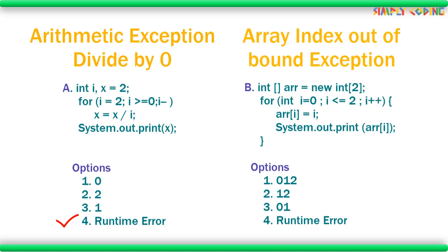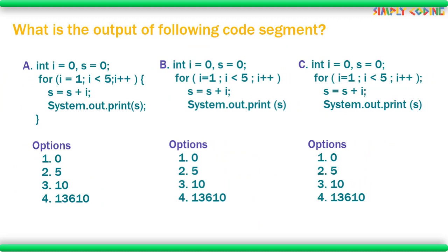In array index out of bounds, there is some condition when the index goes beyond the array size. Like in this example, index i runs till 2, so when it tries to access ARR[2] it will give array index out of bounds error. We will cover exceptions in a separate video, but these are two common scenarios you need to watch out for. After syntax, let's see how to solve output kind of programs.